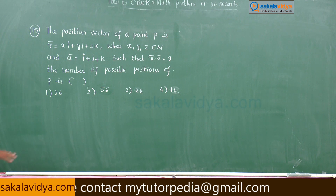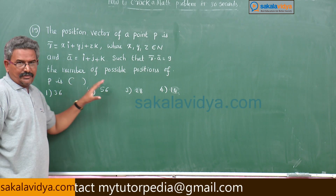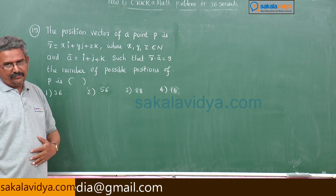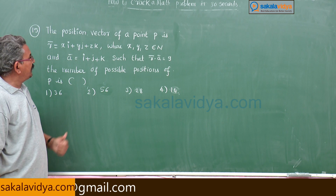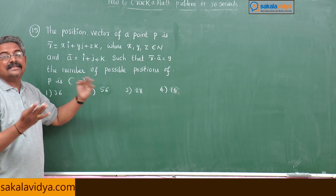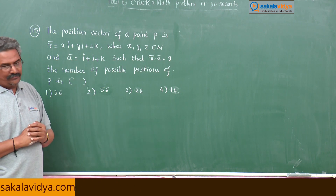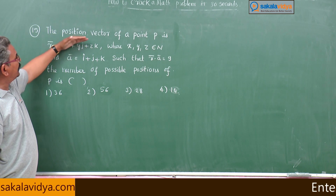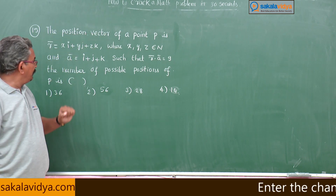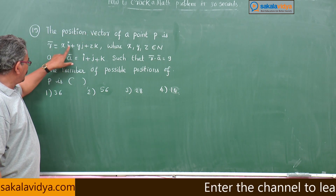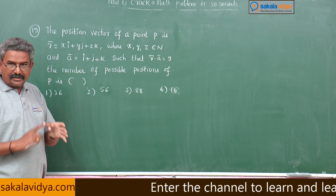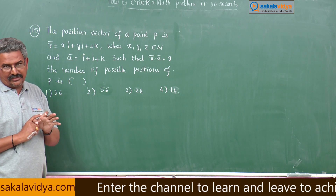This is a very important and seemingly difficult problem, but it can be made very simple. The position vector of point P is given by r̄ = xi + yj + zk, where x, y, z are positive integers.